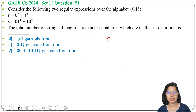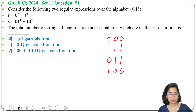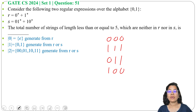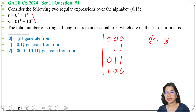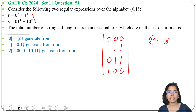For length 3: 000 and 111 can be generated from R, whereas 011, 110, and 100 can be generated from S. So from R and S we can generate: 000, 111, 011, 110, and 100. How many strings are of length 3? 2 power 3 equals 8. So total 8 strings of length 3, from which 4 strings can be generated from R and S. So rather than these 4, there are 4 more strings which cannot be generated from R and S.